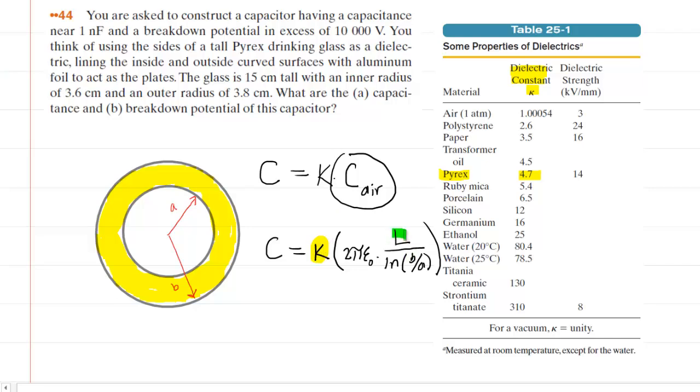The length of the capacitor was given in the question. It says the glass is 15 centimeters tall, so that's the length of the cylindrical capacitor. The values of B and A are given as well. The outer radius is 3.8, so that's your B. And the inner radius is 3.6, so that's your A.